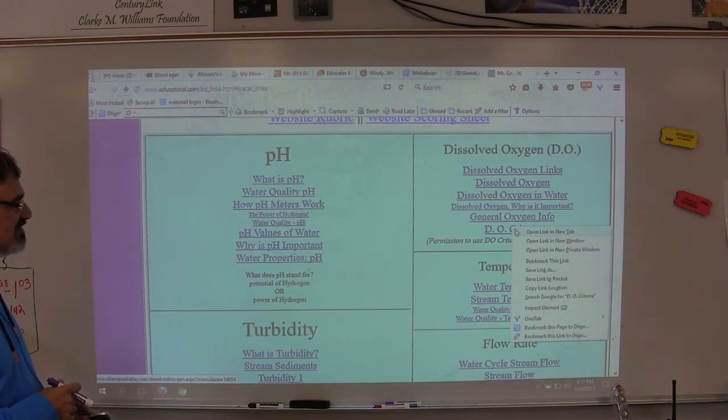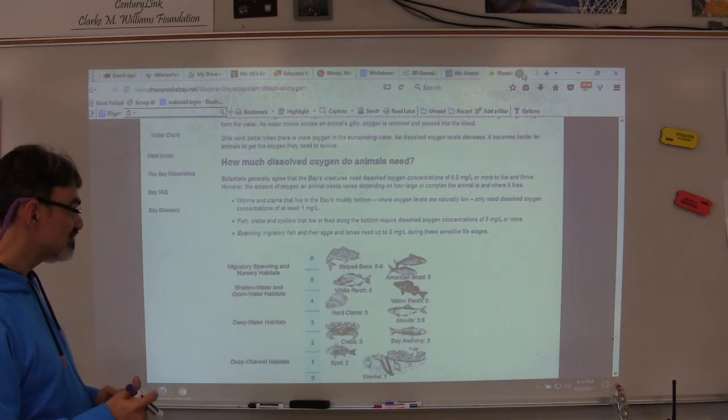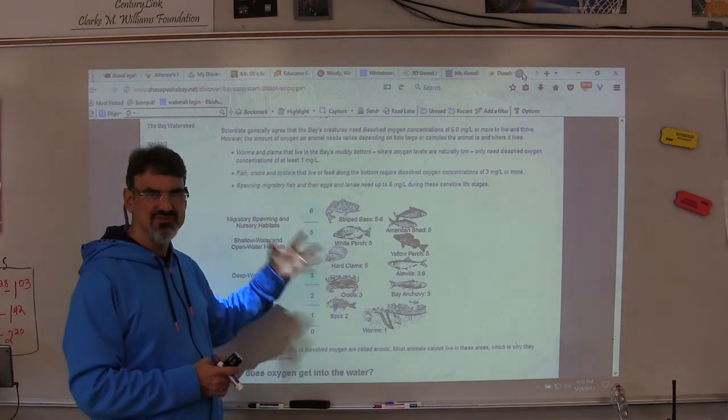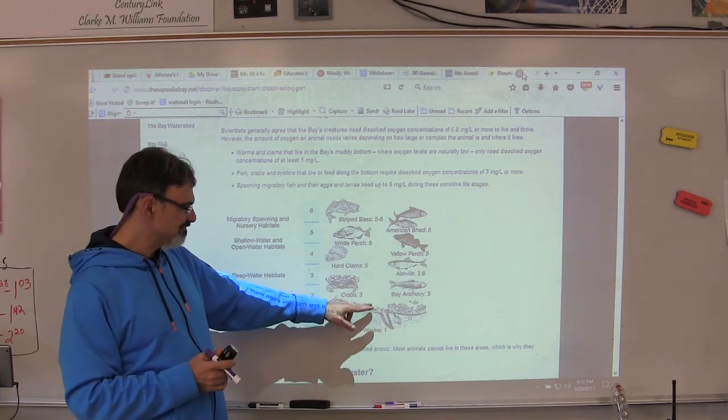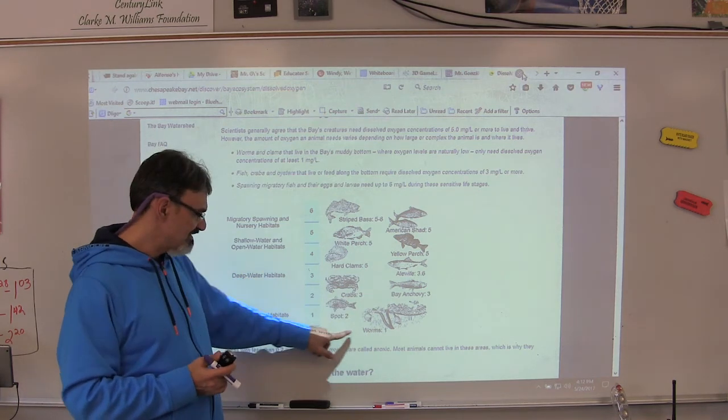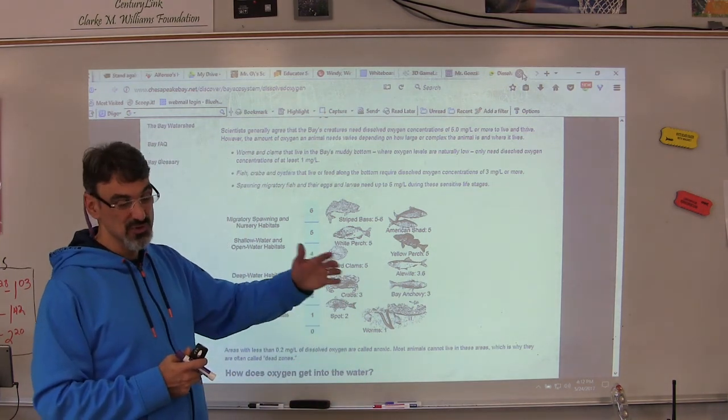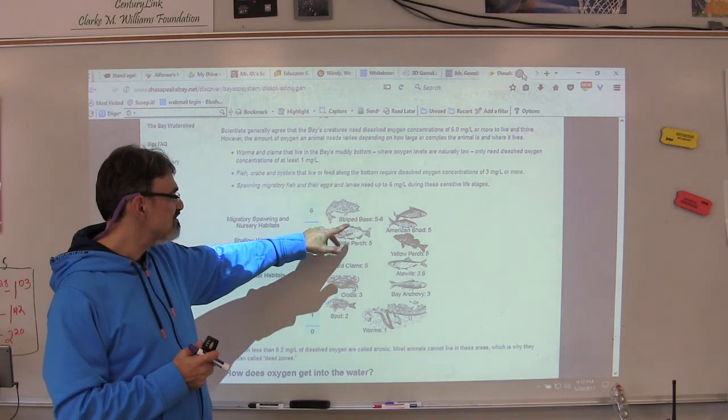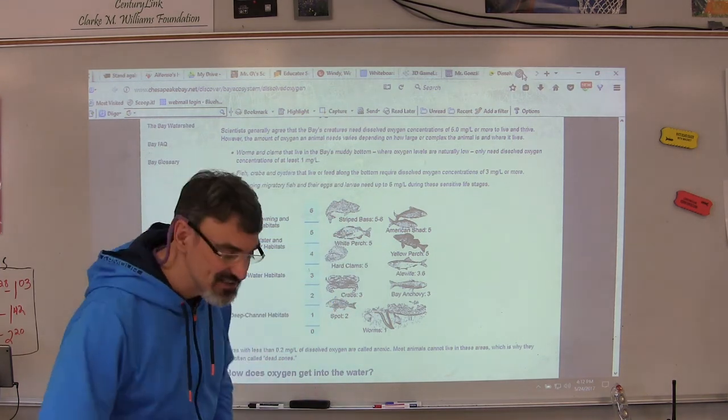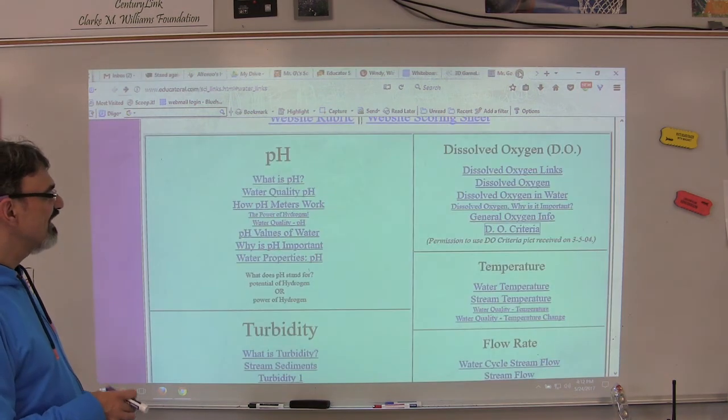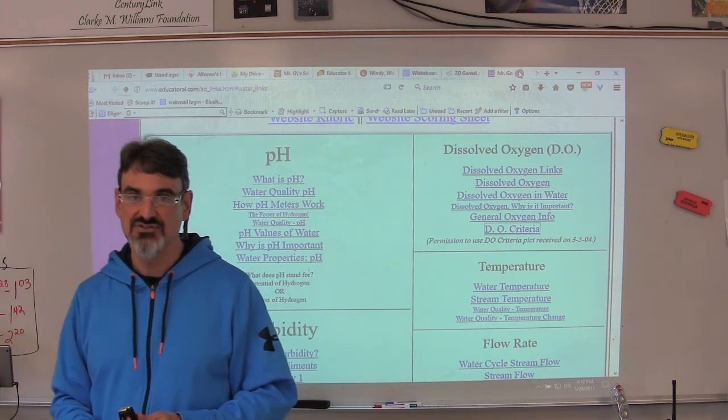And then the last one for DO criteria has a picture on it that you might want to refer to or use. I've shown you before on some of the other websites earlier, but this one is a nice picture of it. So it shows different fish, including worms, which is not a fish. And it says worms can survive in water with only one milligram per liter of dissolved oxygen. That's why our worms are very tolerant. Whereas striped bass will need five to six milligrams per liter. So you can see the bigger the fish, the more dissolved oxygen it's going to need. So that's what this one is for. And that should give you plenty to do a great presentation and make a great webpage for your website.